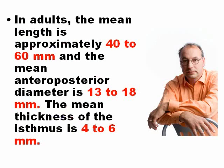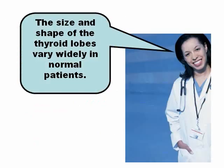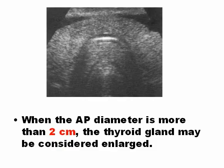In adults, the thyroid is generally 4 to 6 cm in length, and 1 to 2 cm in the anterior-posterior dimension. The isthmus is generally less than 1 cm. The thyroid is very variable — different people have different thyroid sizes, and that does not mean it is abnormal. However, when the anterior-posterior diameter is more than 2 cm, the thyroid gland may be considered enlarged, which is called a goiter.